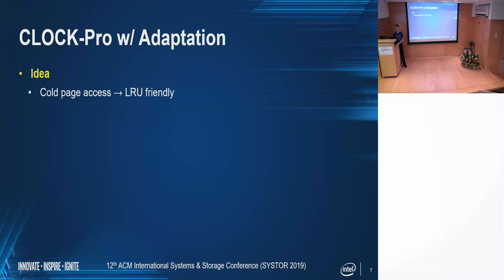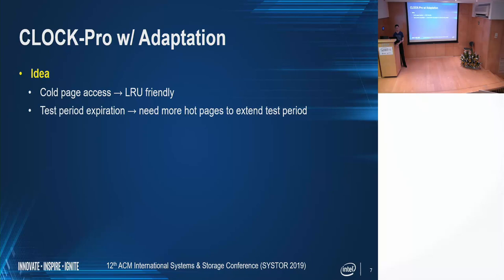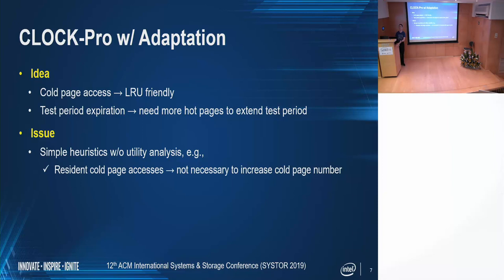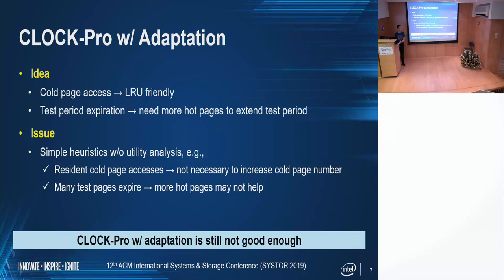CLOCK-Pro incorporates a simple adaptive mechanism. The idea is to guess whether the workload is LRU-friendly or not. If there is an access to a resident or non-resident cold page, it is regarded as LRU-friendly. If it sees that there are test pages expired, then it assumes it is not LRU-friendly and it needs more cold pages to extend the test period. The heuristic is simple but without utility analysis. For example, if there are accesses to those resident cold pages, those are cache hits and it is not necessary to increase the cold page number. And when there are many test pages expired, incorporating more hot pages may not help. That is to say, CLOCK-Pro with adaptation is still not good enough.